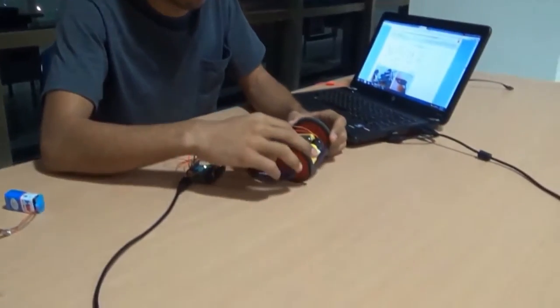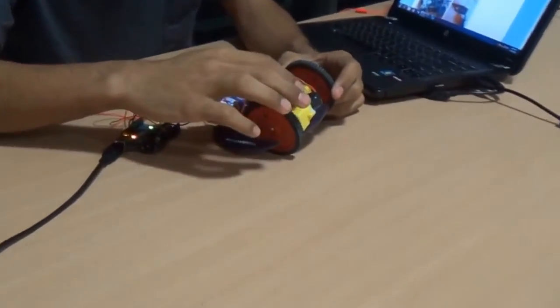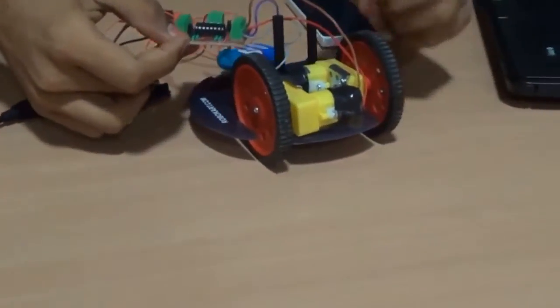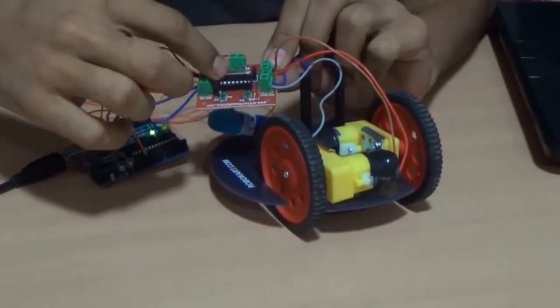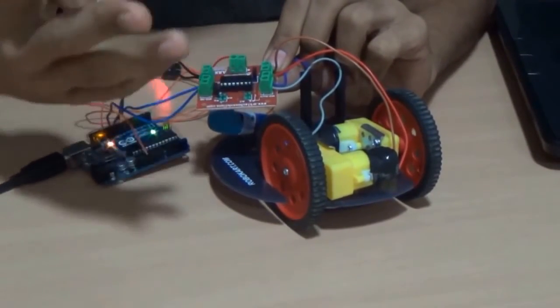We are using two wheels for controlling by DC motors and this DC motors controlled by this motor driver. And this motor driver is consisting L293D IC and this IC is having 16 pins.